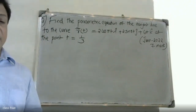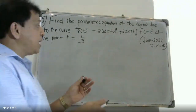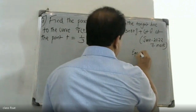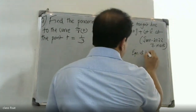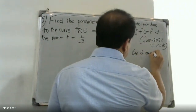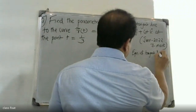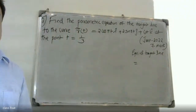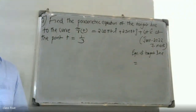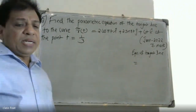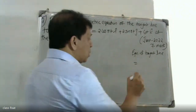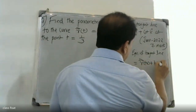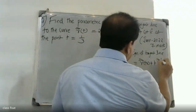The equation of the tangent line. The formula for the equation of the tangent line is: r(t₀) + t · r'(t₀).